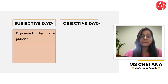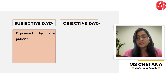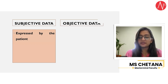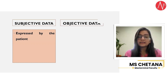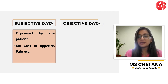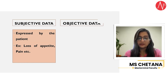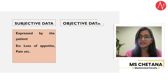Subjective data is something which is expressed by the patient, which is said by the patient. For example, the patient told you that they are having pain in the stomach. Whatever the patient feels — their feelings, emotions — all of these things come under subjective data. For example, the patient may say that they are having loss of appetite, pain, some kind of sensations, or itching. All of these come under subjective data.